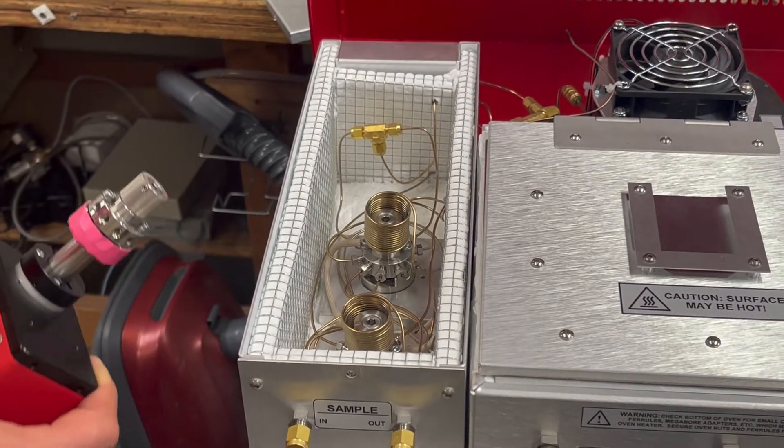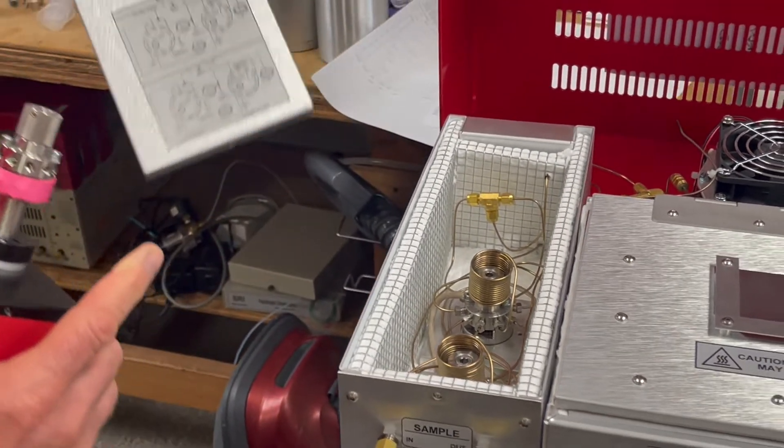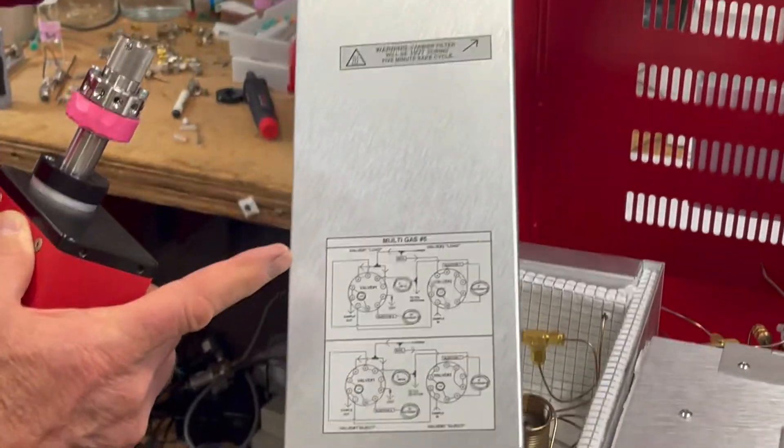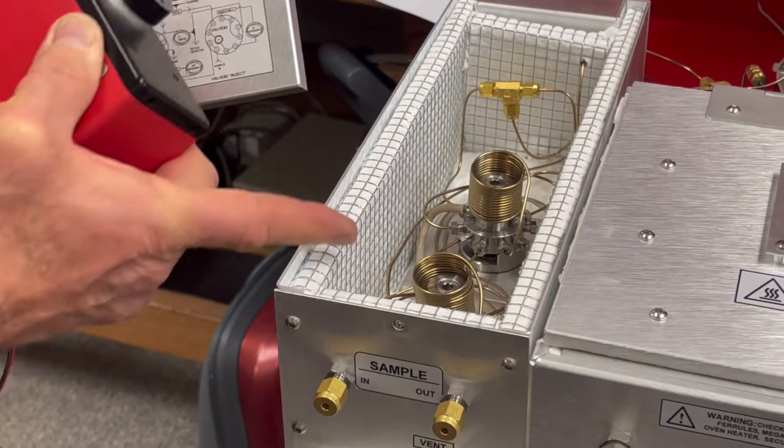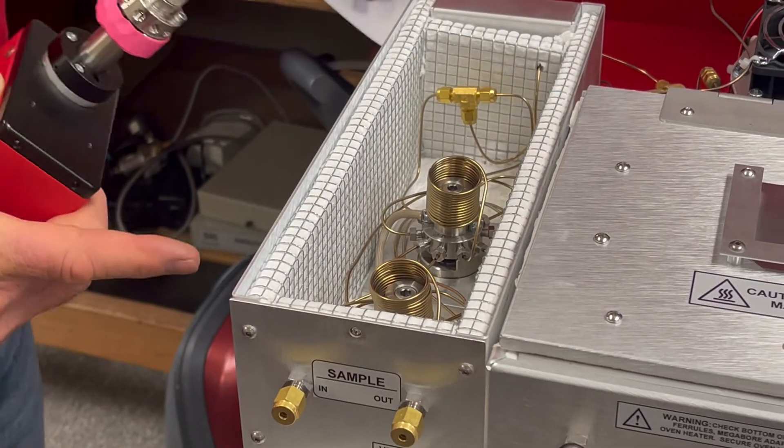And we make the connections really many different ways depending on what we're trying to do. So, there's always a little map on the top of the valve oven box that shows how the tubes are connected to the valve head.